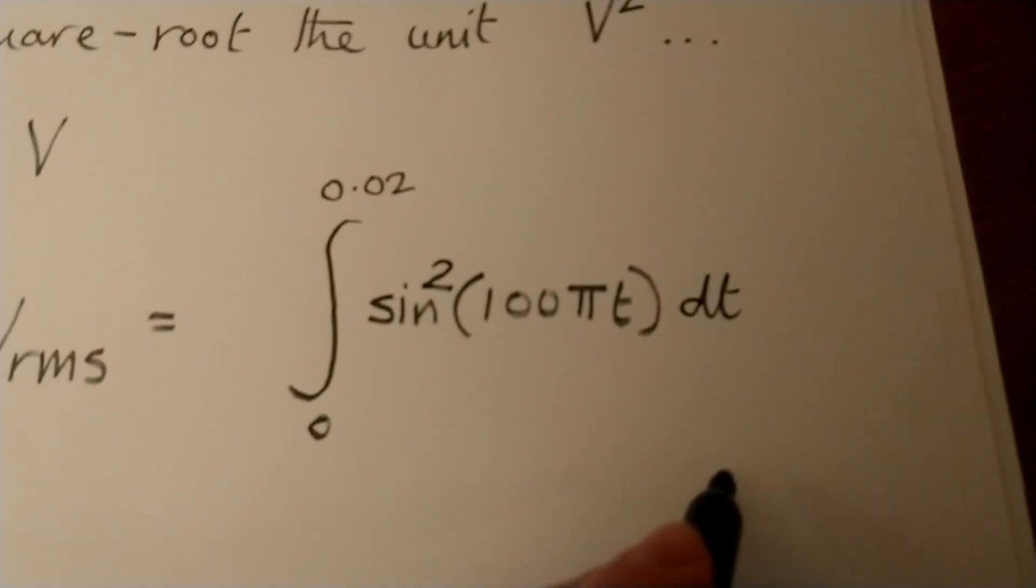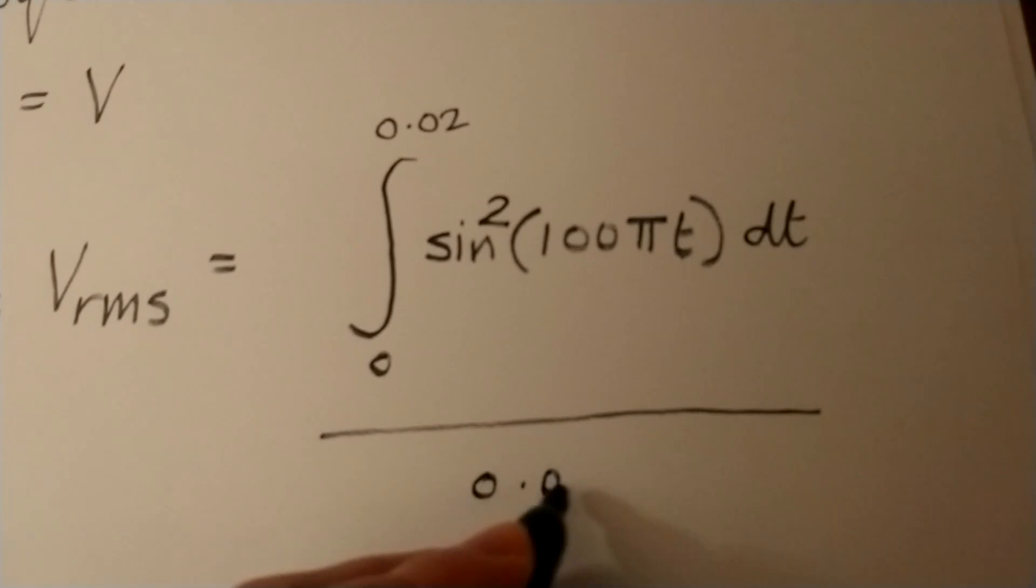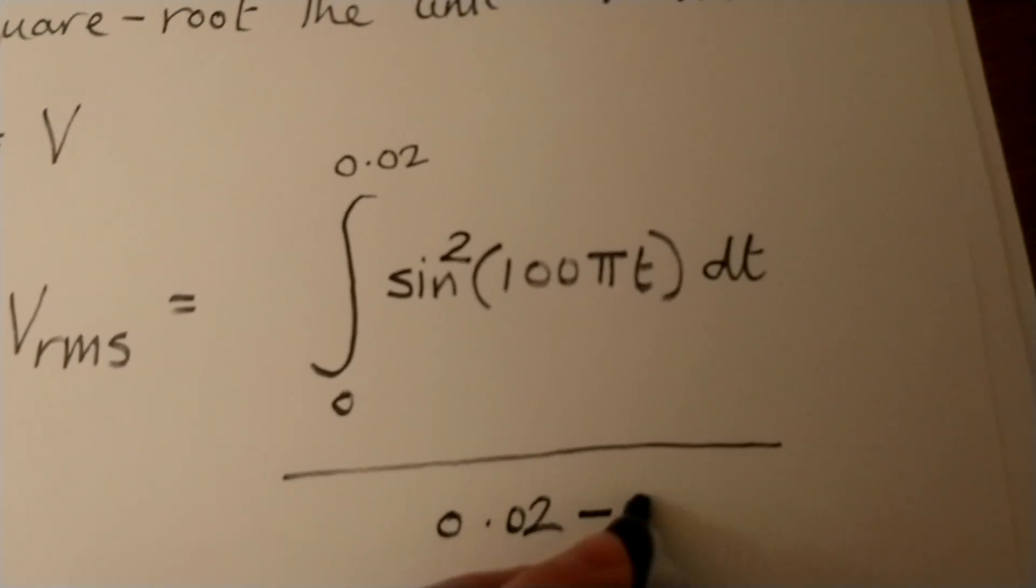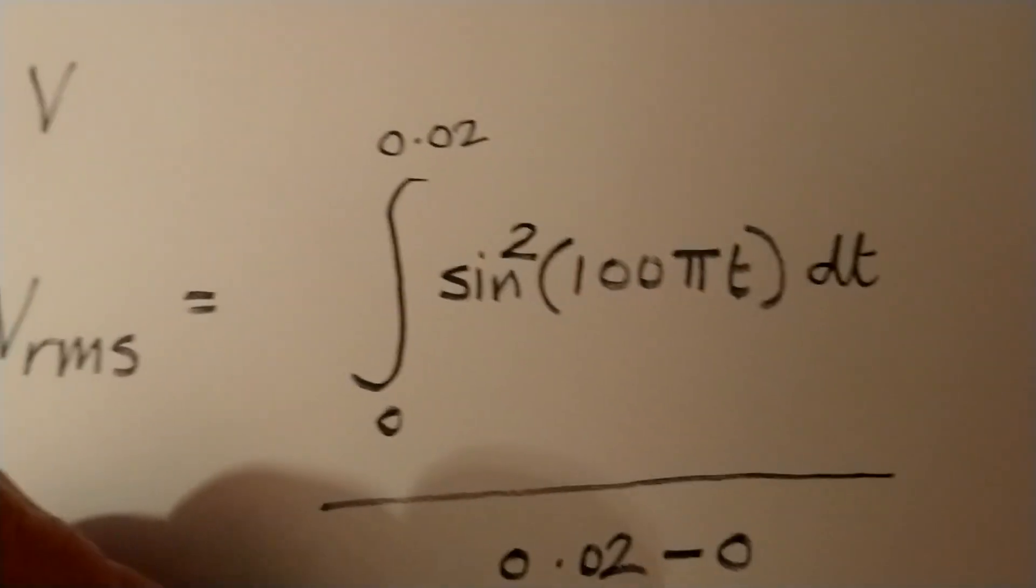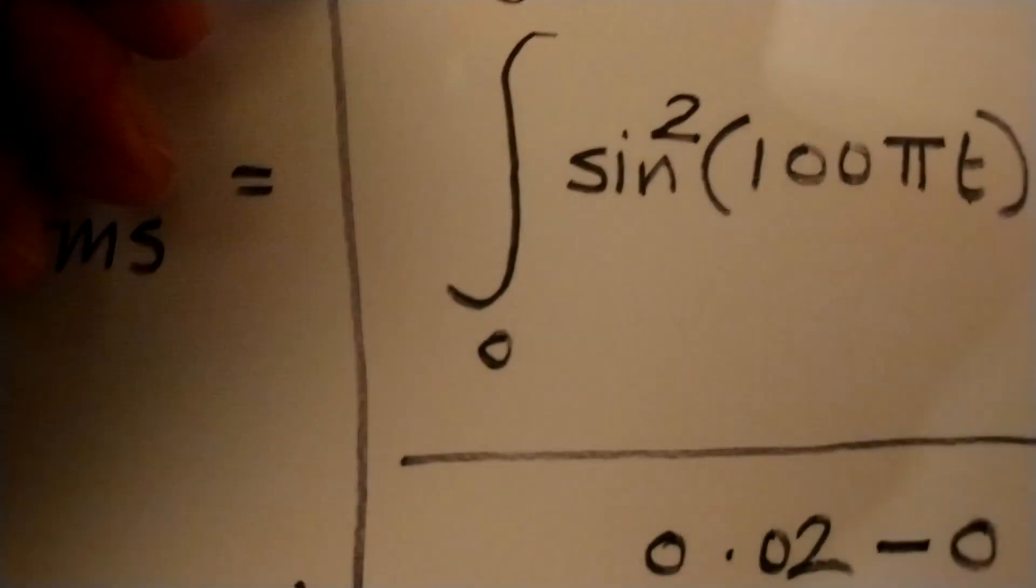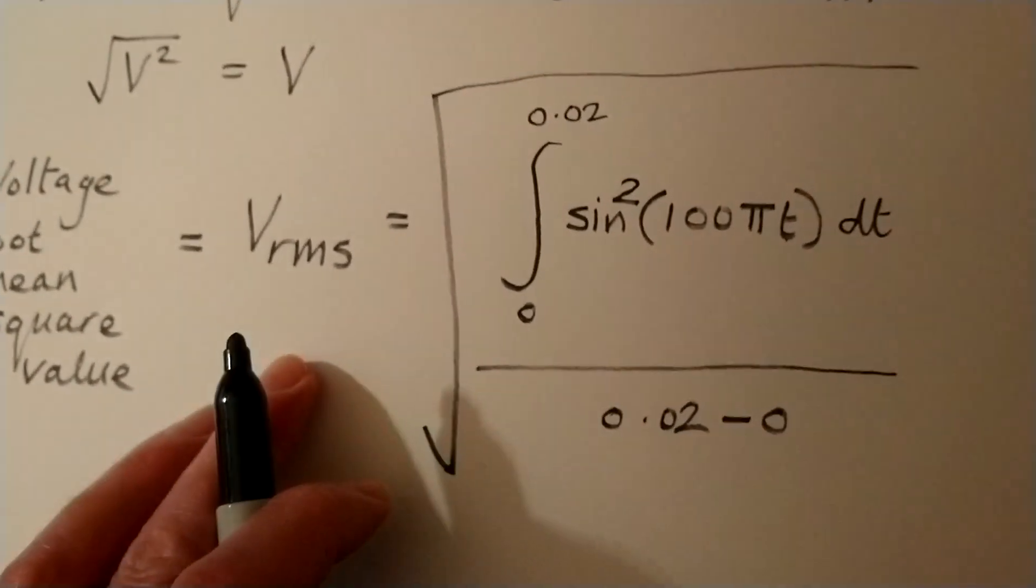You integrate that between 0 and 0.02. You work out the mean by dividing by the time period. And then having done all of that, you square root it. OK, so that's how you work out the root mean square voltage.